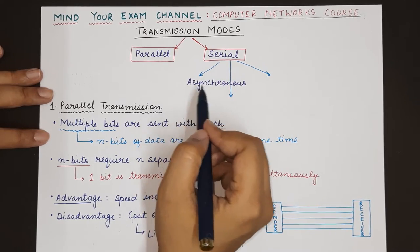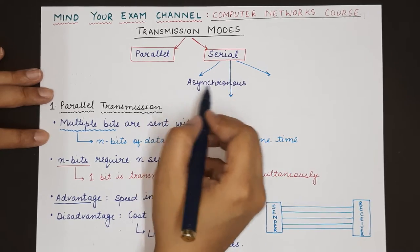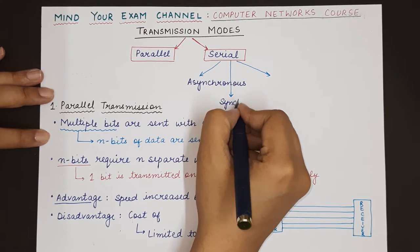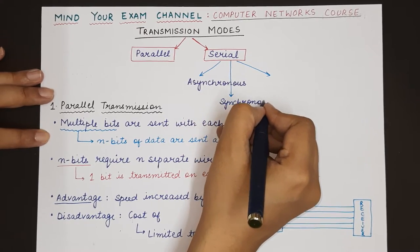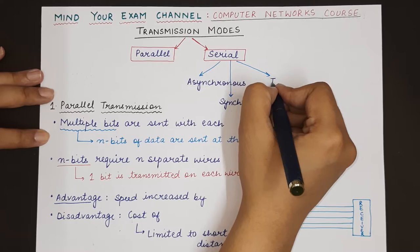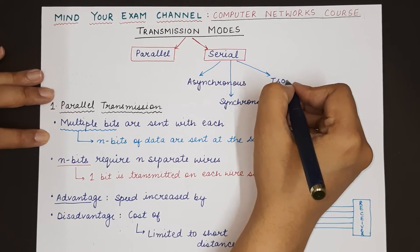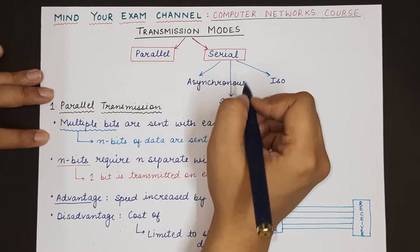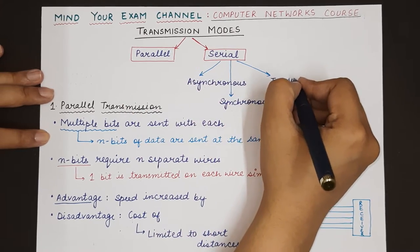There are three types of serial transmission modes: first is asynchronous, the second is synchronous, and the third one is isochronous. We will be studying all three of them in detail along with the parallel transmission mode.